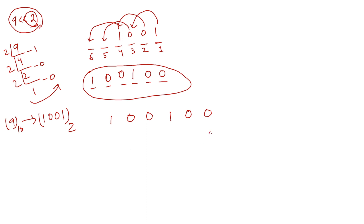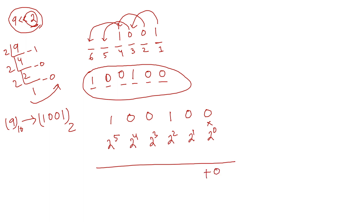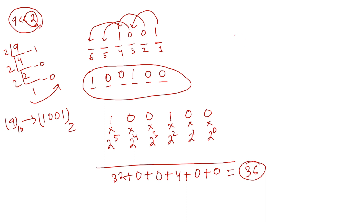Now I convert 100100 back to decimal. Assigning powers of 2 from right to left: 2⁰×0 + 2¹×0 + 2²×1 = 4 + 2³×0 + 2⁴×0 + 2⁵×1 = 32. So 32 + 4 = 36. That means when I do 9 left shift 2, the answer is 36.